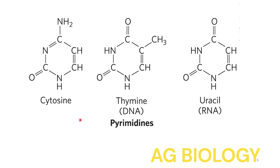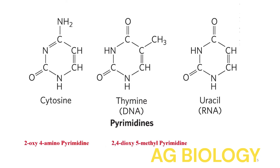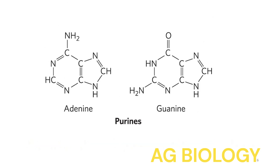Now let's examine the naming of pyrimidines. A carbonyl group is named as 'oxy' and NH2 is called 'amino'. So cytosine is 2-oxy-4-amino pyrimidine; thymine is 2,4-dioxy-5-methyl pyrimidine; uracil is 2,4-dioxy pyrimidine. For purines: adenine is 6-amino purine, and guanine is 2-amino-6-oxy purine.